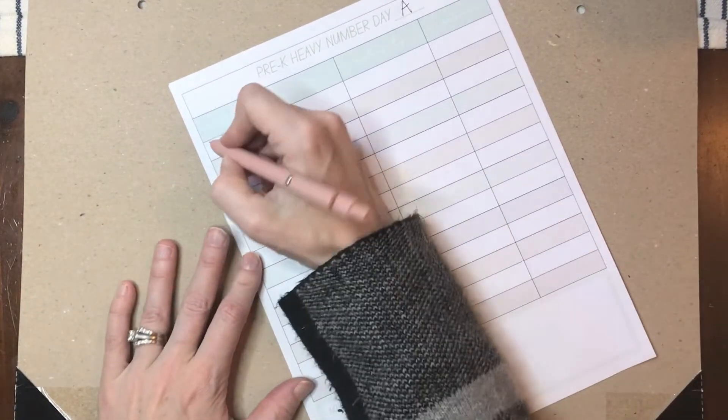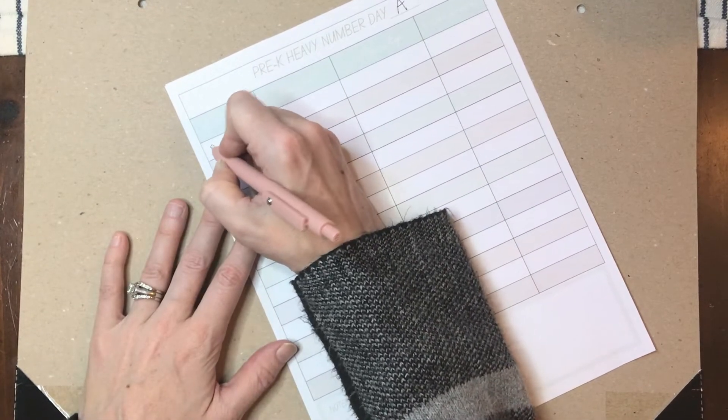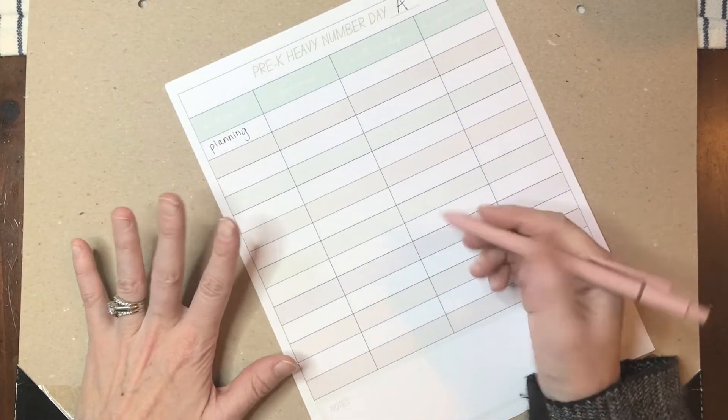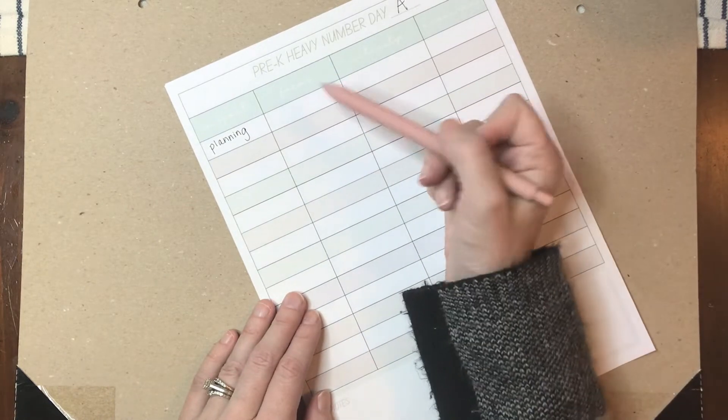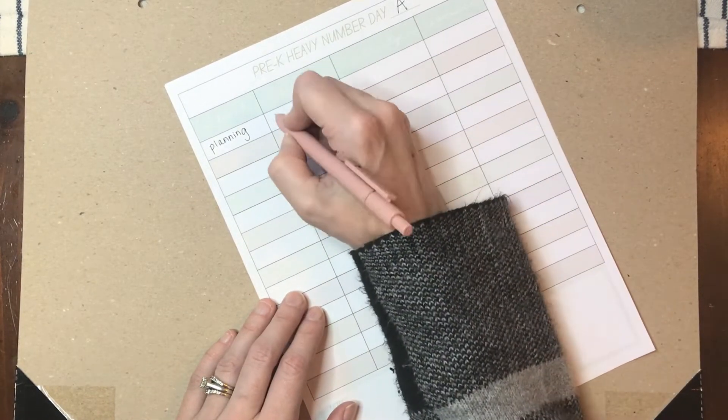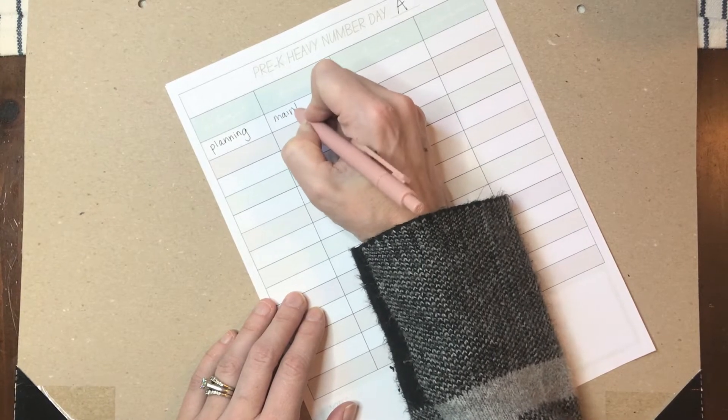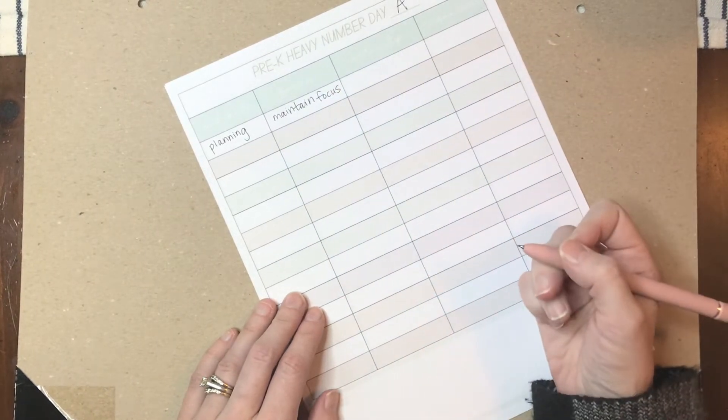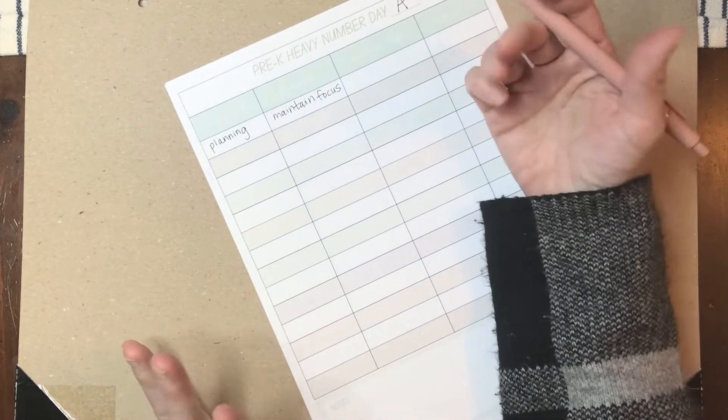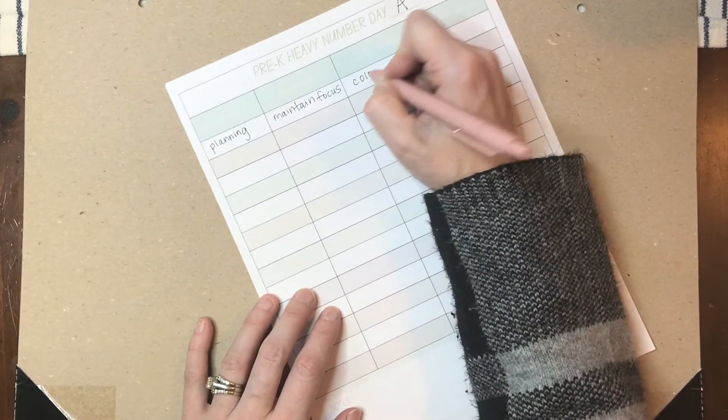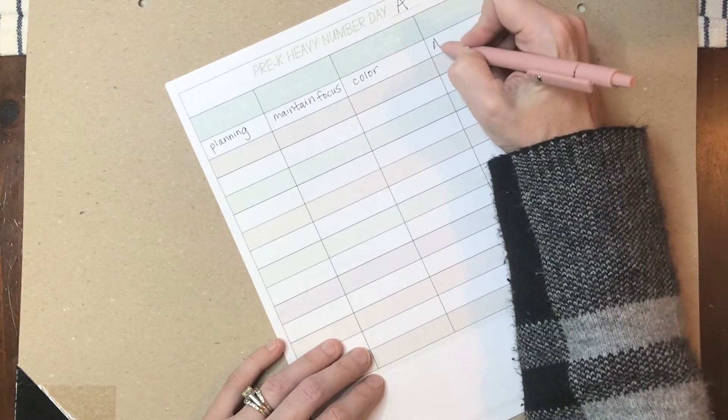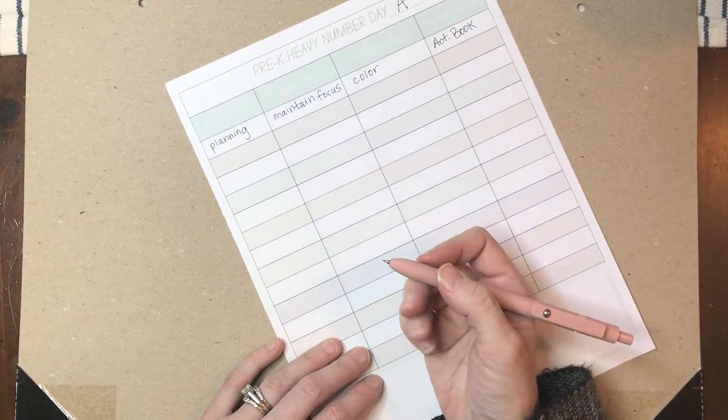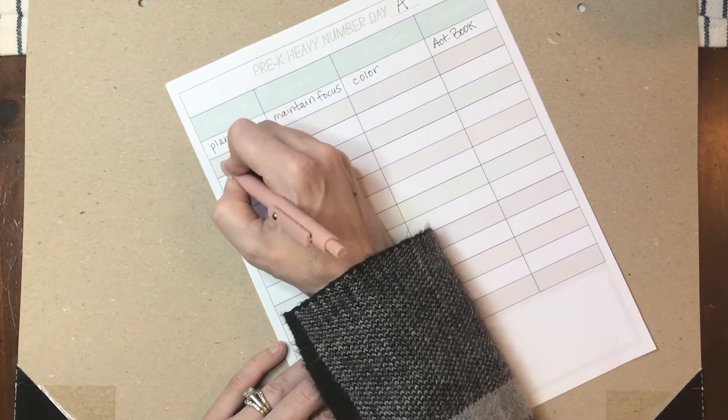My first subject I'm going to plan for is planning time. This is when I get out my planner and my lesson plans and go over them with his older brothers and they're putting them into their student planners. The focus for him is really just for him to maintain focus. Kids have to build up their mental stamina. He's not actually planning - I'm just having him color during that time, and he uses his Berenstain Bear activity book.